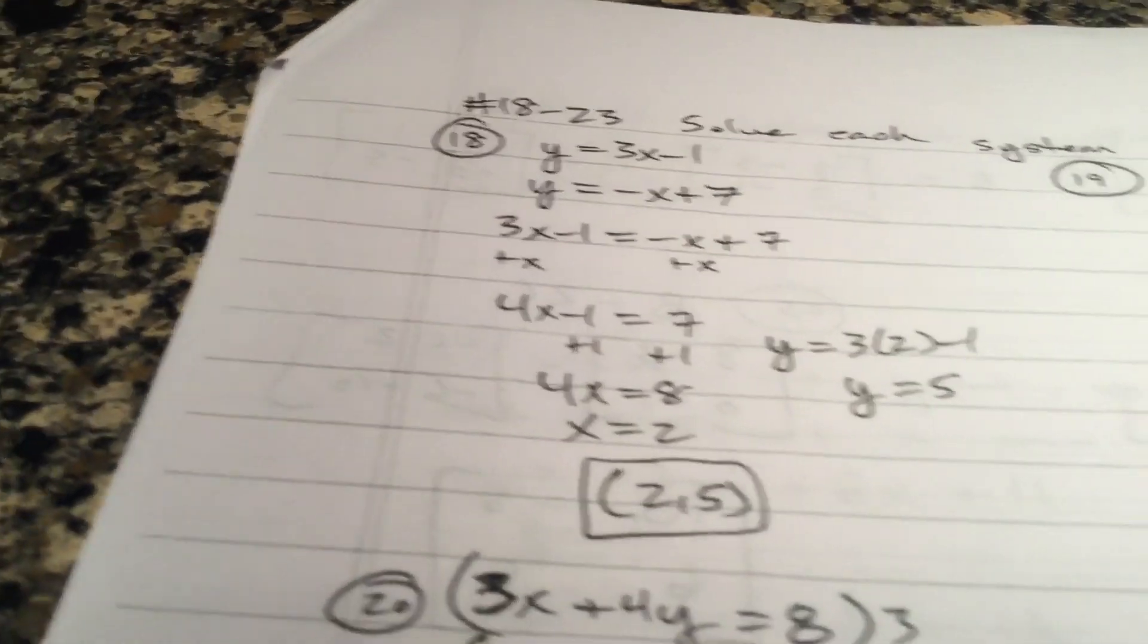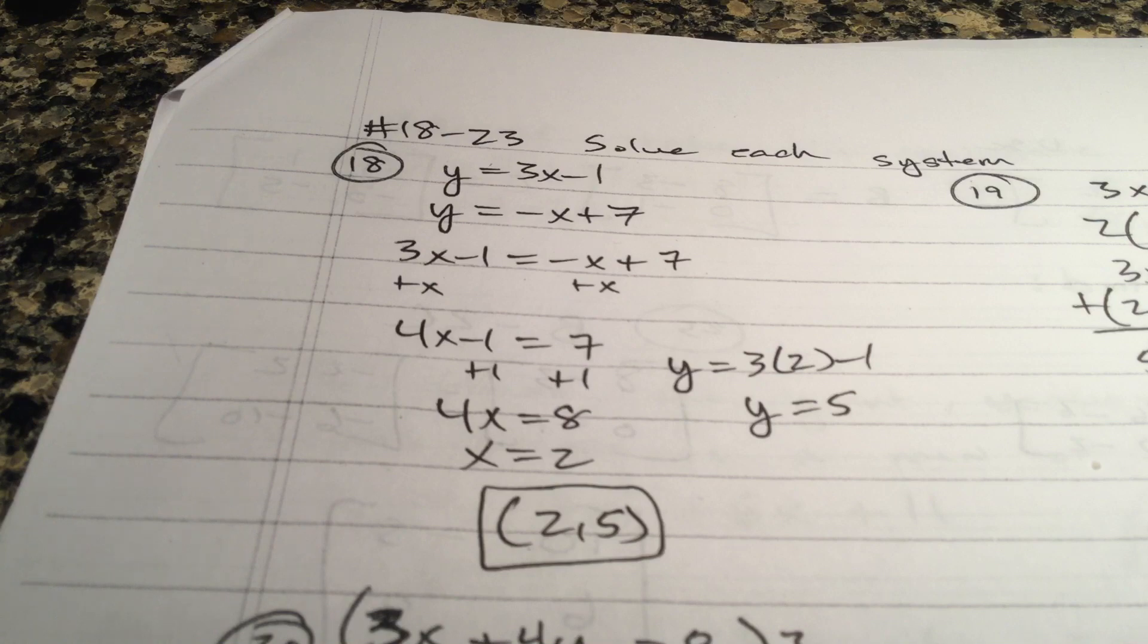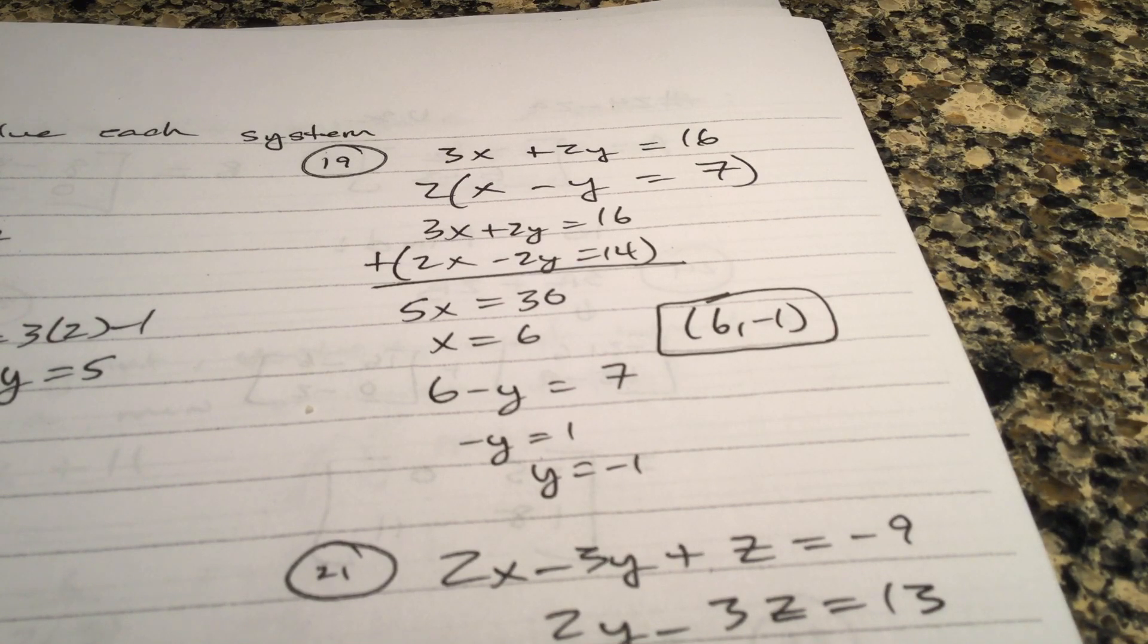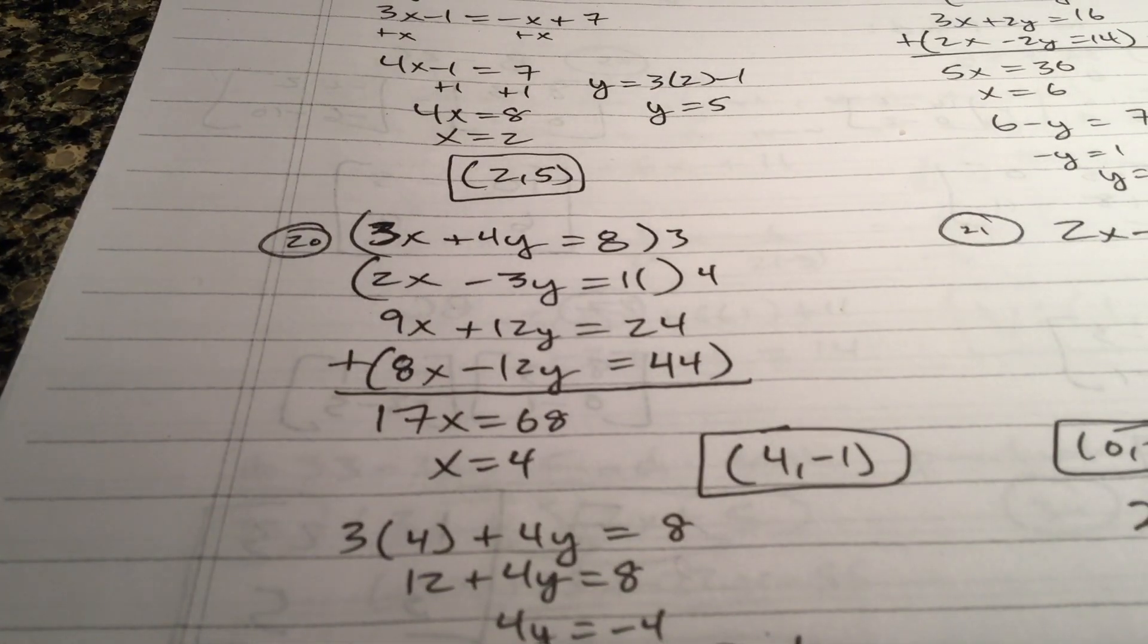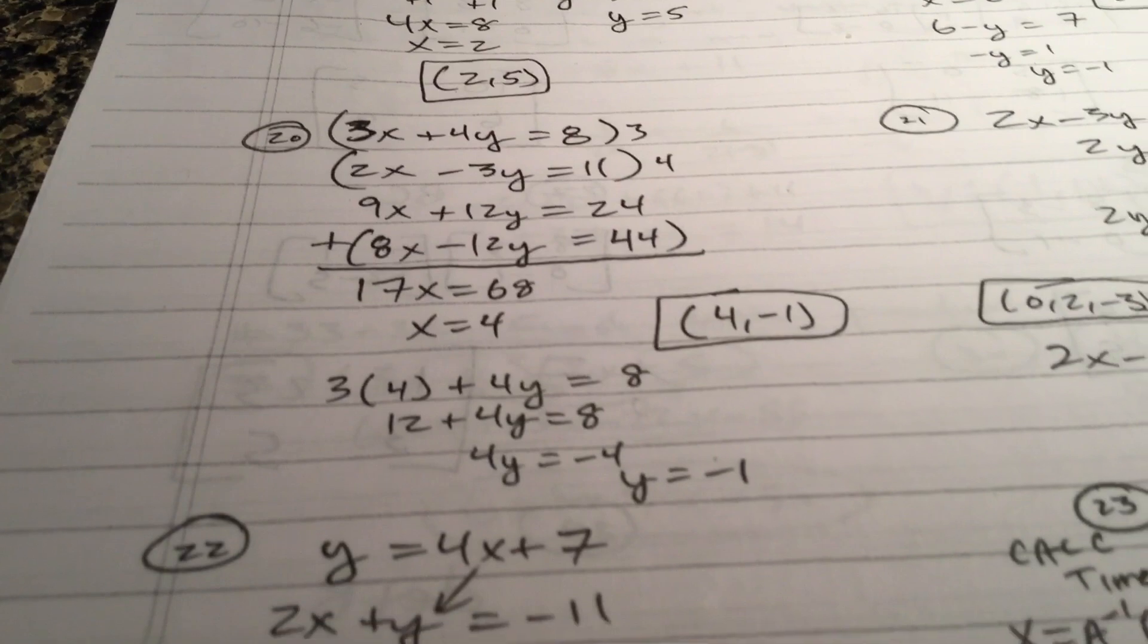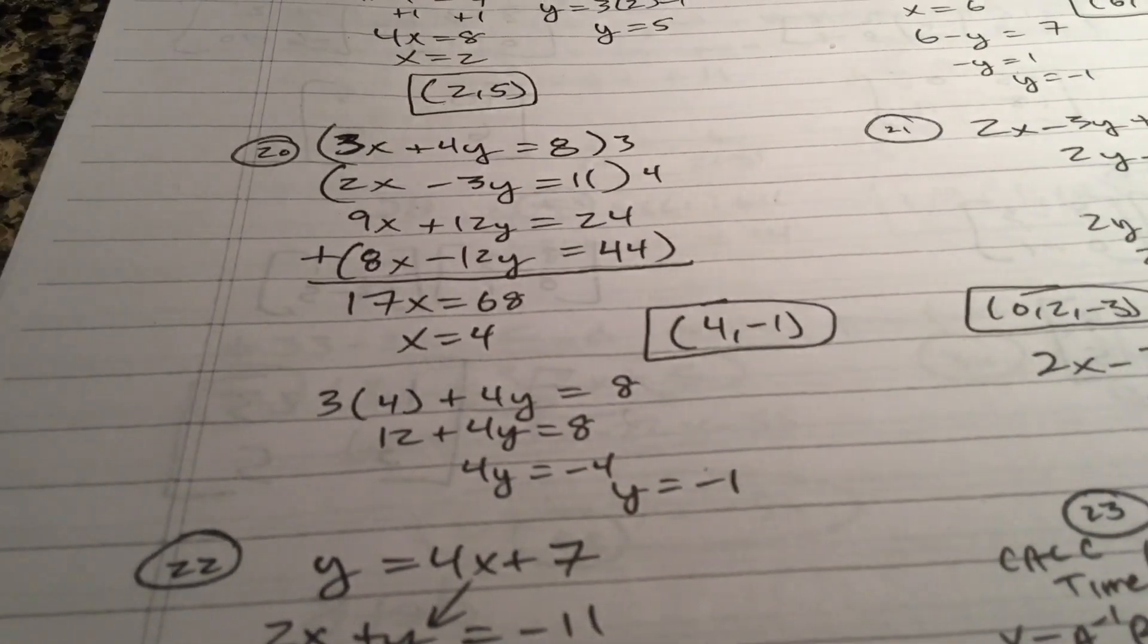Alright, moving on. Set them both equal to each other. X is 2. And you've got y is 5. Set, or I would double the bottom equation. Then you can eliminate the y's by addition. You get 6. Plug 6 into either equation. You get y is negative 1. Here I used elimination. I tripled the top one, multiply the bottom one by 4 because y's have opposite values. You get x's. Again, you add them together. Opposite signs mean you add x is 4. And then you're going to get y is negative 1. That's a nice answer.